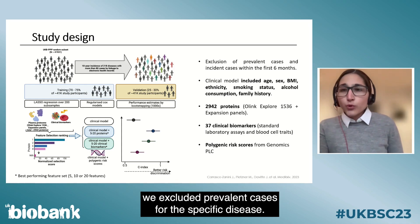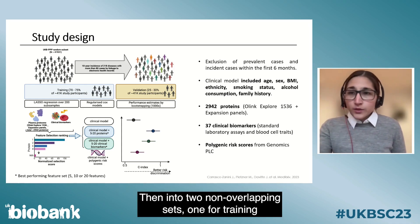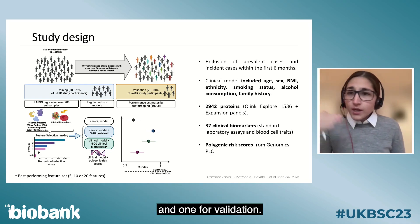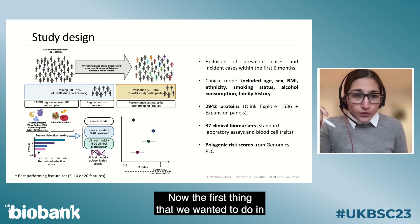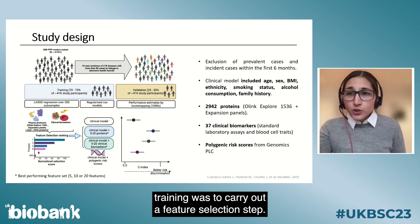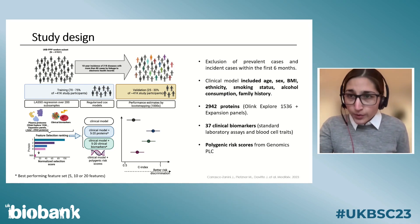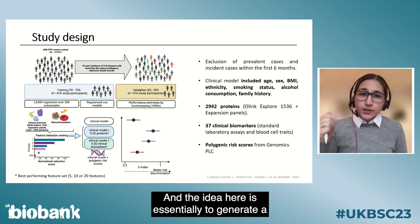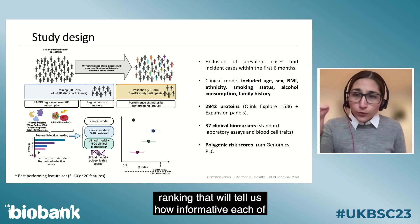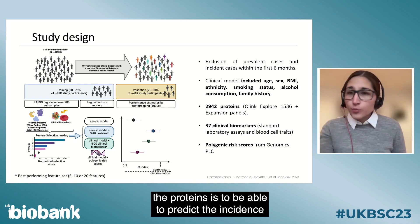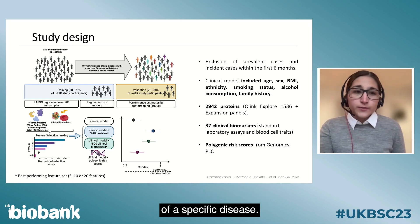We took individuals randomly selected from the UK Biobank pharma proteomics project, excluded prevalent cases for the specific disease, and split them into two non-overlapping sets: one for training and one for validation. The first step in training was a feature selection step, where the idea was to generate a ranking telling us how informative each protein is for predicting the incidence of a specific disease.